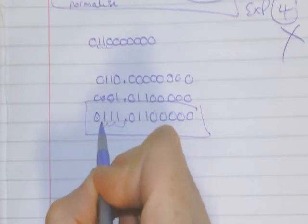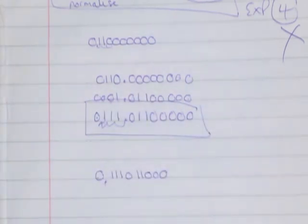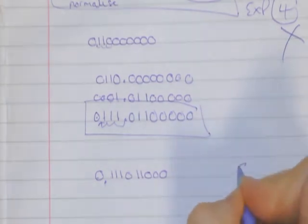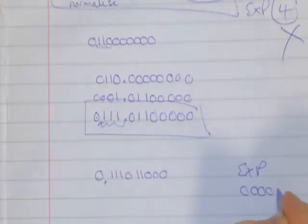that was 1, 2, 3. So my exponent would actually be 0, 0, 0, 0, 1, 1.